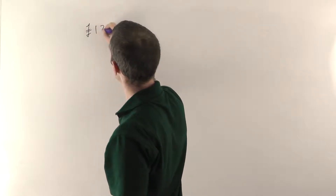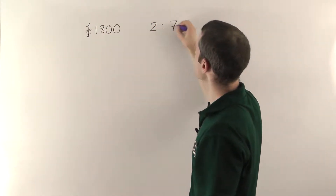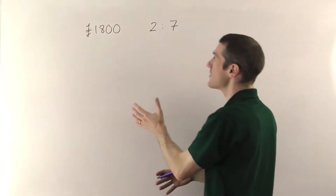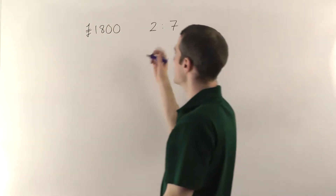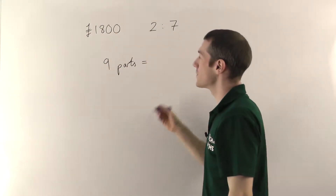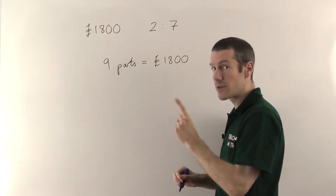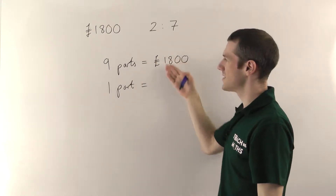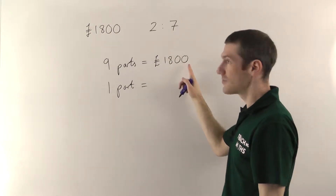Now imagine we've got a bit more money — 1800 pounds — and we're going to split it up between two people. The first person gets two parts and the second person gets seven parts, so we're splitting up in the ratio two to seven. This is a very typical ratio question: split up 1800 pounds in the ratio 2 to 7. Two plus seven gives us nine parts total, equal to 1800 pounds. To find one part, nine parts is 1800, so we divide by nine — 1800 divided by 9 gives us 200.